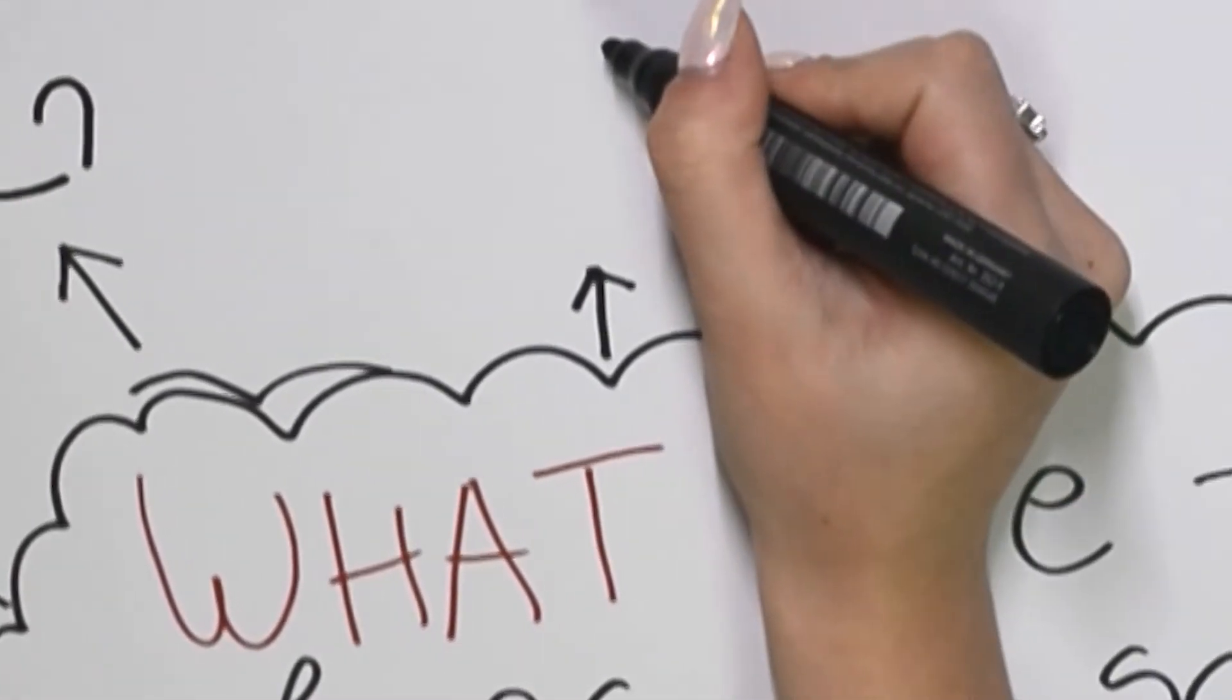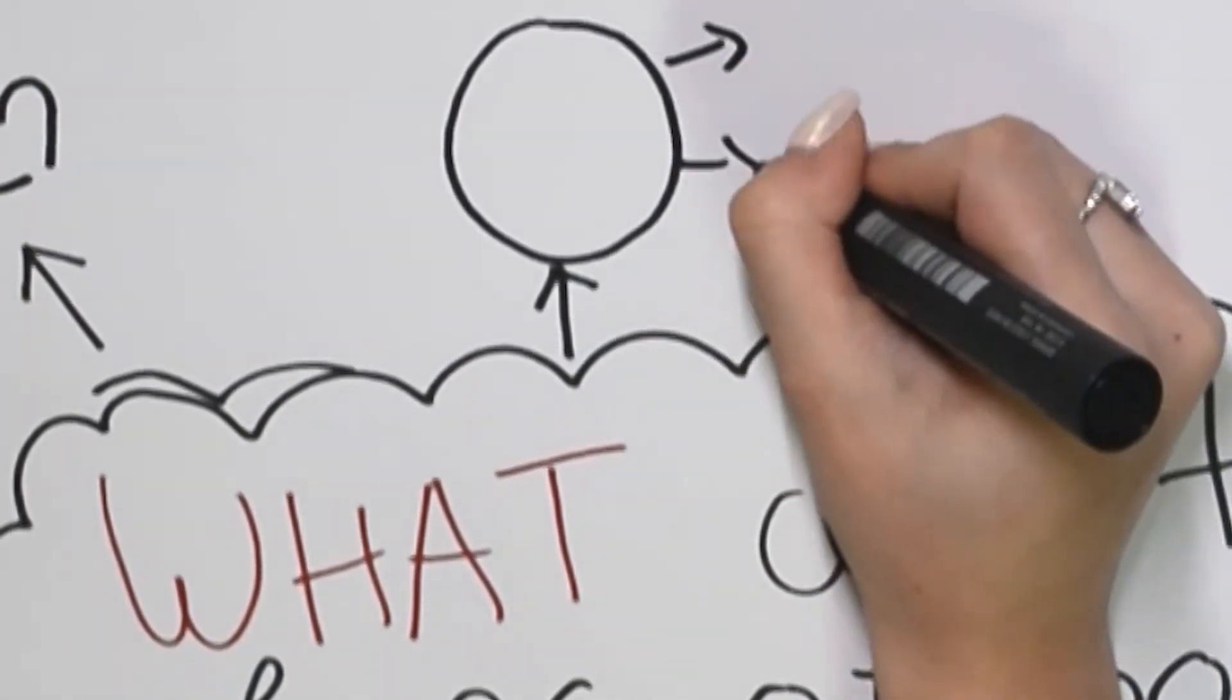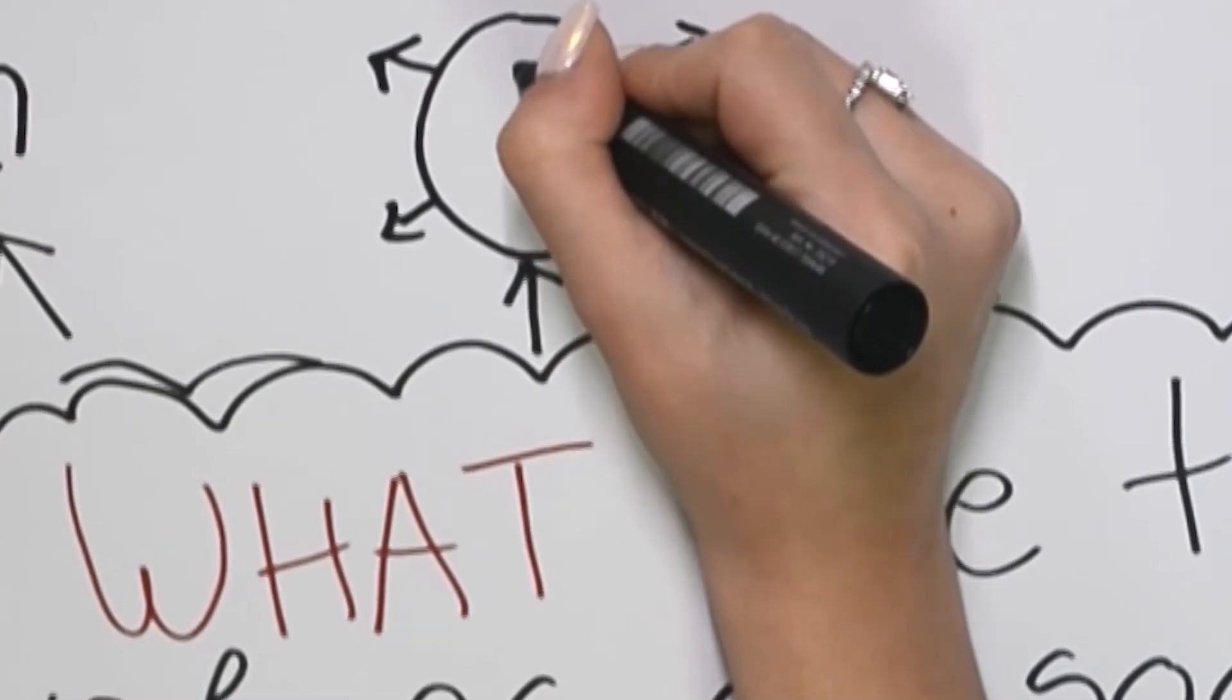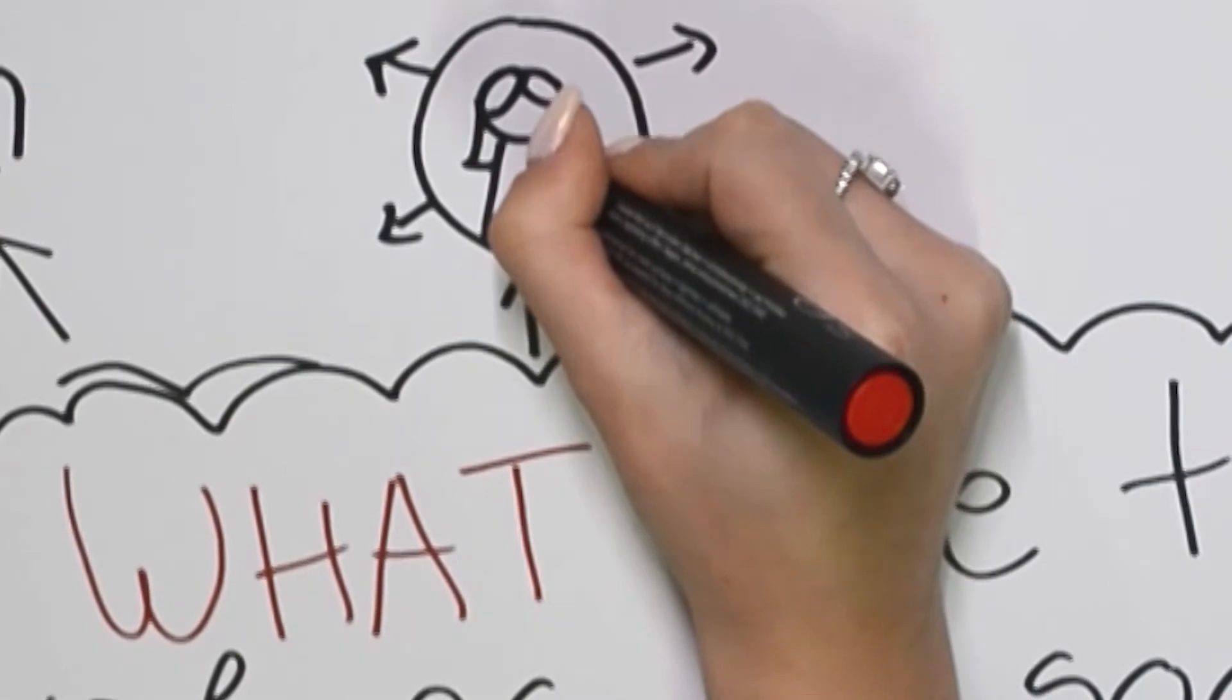Accountable. The social entrepreneur should be able to justify actions or decisions and to be completely responsible for what they do, and must be able to give a satisfactory reason for it.